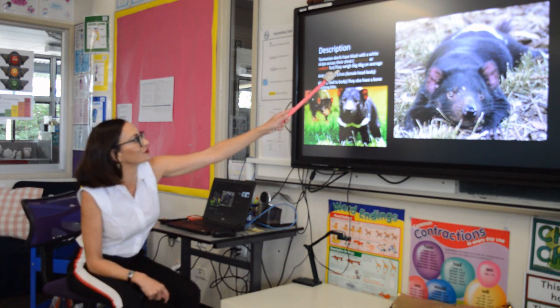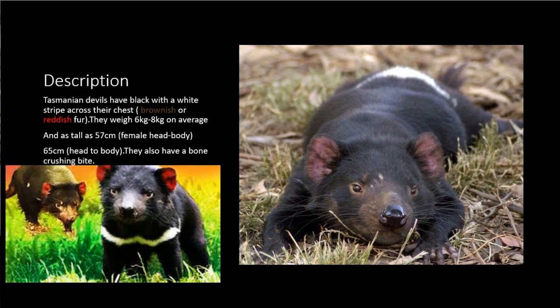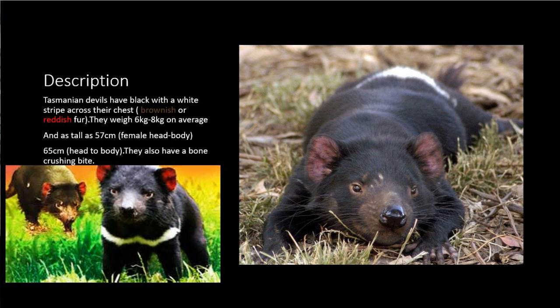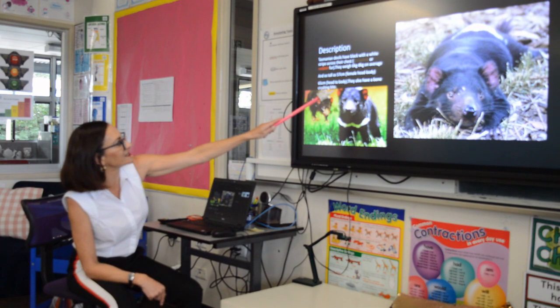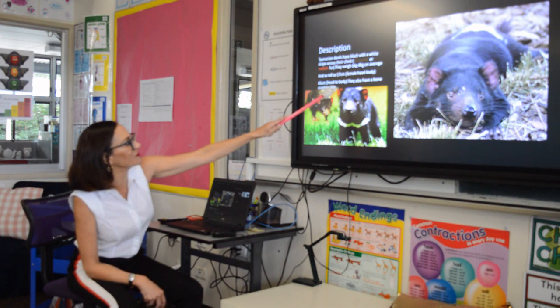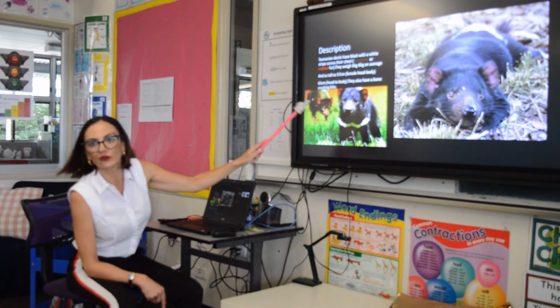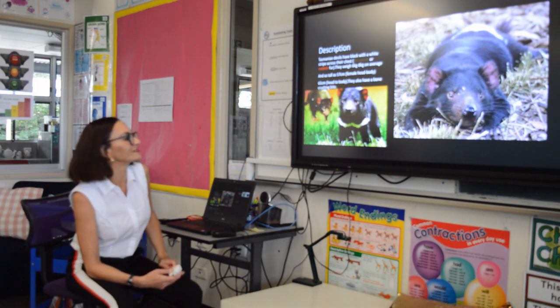I love how he's tried to use colour to mirror the colour of the fur of the Tasmanian Devil. He's written that Tasmanian Devils have black with a white stripe across their chest, brownish or reddish fur. I love this sentence: they also have a bone-crushing bite.